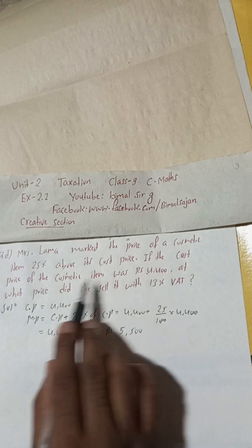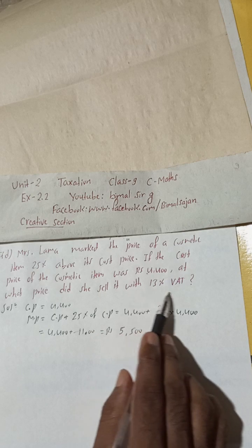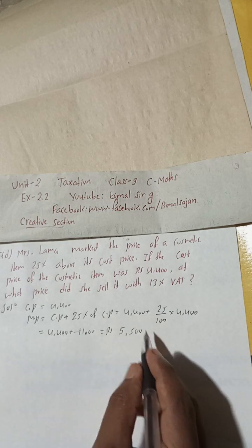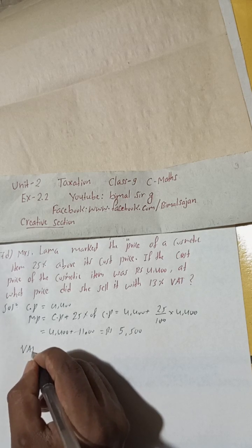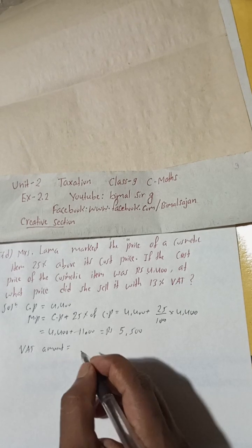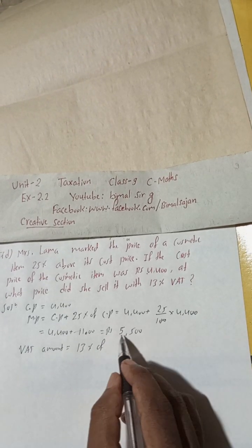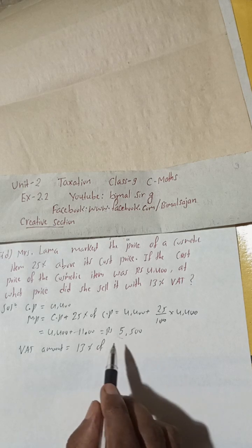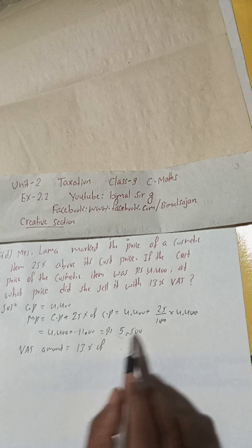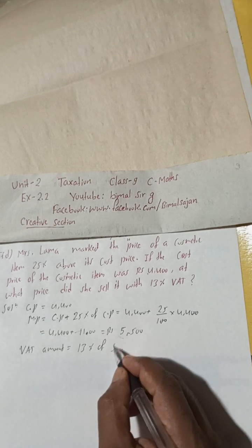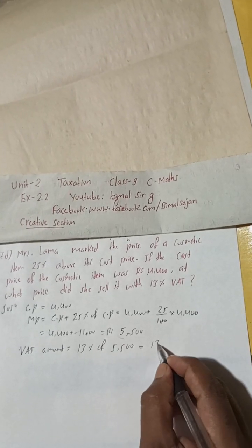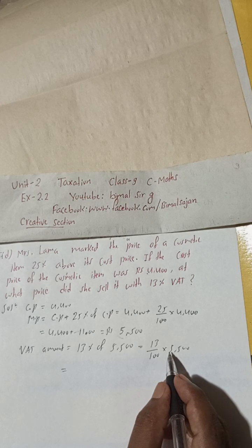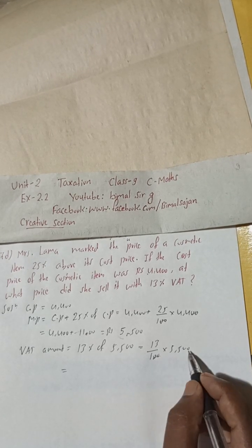Now the question tells at what price did she sell it with 13 percent VAT? So selling price with VAT, there is not any discount amount given, so we can now directly apply VAT here. Now we will add VAT amount. VAT amount is equal to 13 percent of this mark price because discount is not there. 13 percent of 5500, so 13 percent divided by 100 into 5500. So if you multiply, this two zeros cancel, you will get here 715.